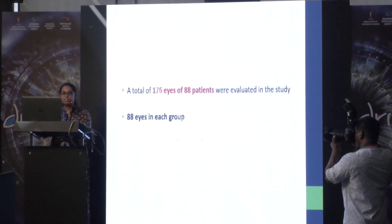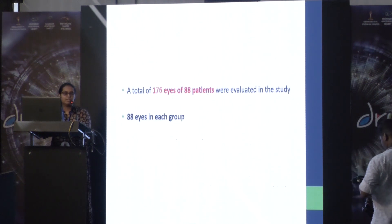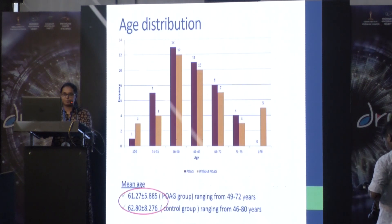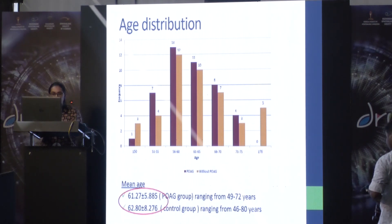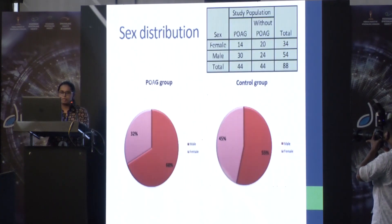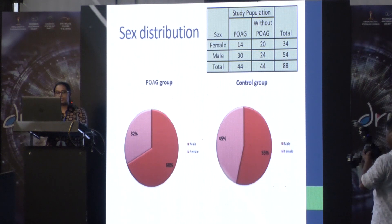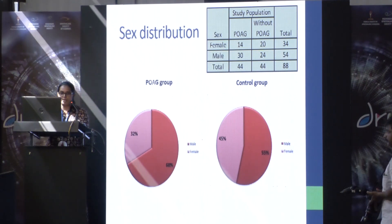A total of 176 eyes of 88 patients were evaluated in the study, with 88 eyes in each group. The mean age was almost similar in both groups, ranging from 49 to 72 years in the POAG group and 46 to 80 years in the control group. Both groups had more males, with the percentage being higher in the primary open angle glaucoma group.